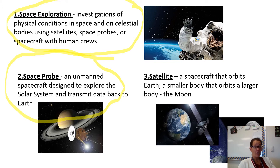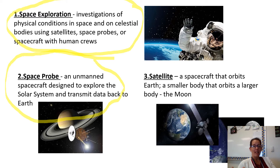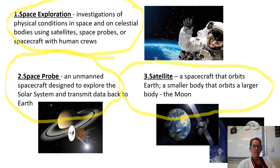The first word we're going to talk about is space exploration, which is an investigation of physical conditions in space and on celestial bodies using satellites, space probes, or spacecraft with human crews. The next word is space probe — an unmanned spacecraft designed to explore the solar system and transmit data back to Earth.